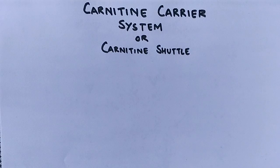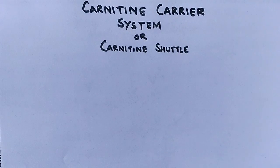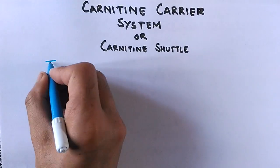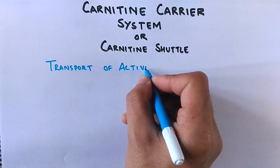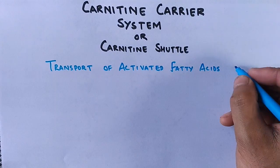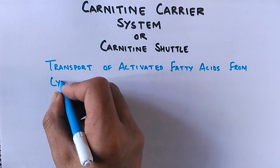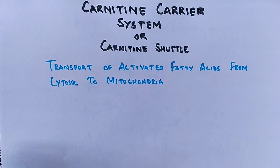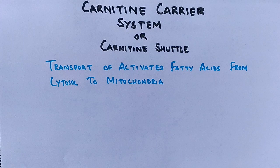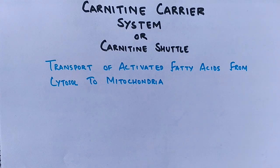In the carnitine shuttle, or carnitine carrier system, there is a transport of activated fatty acid from cytosol to mitochondria, because the fatty acid activation occurs in the cytosol, or more preferably in the endoplasmic reticulum. Then there is transport towards the mitochondria for beta oxidation.